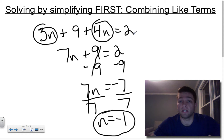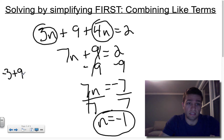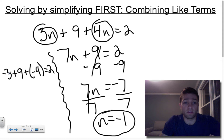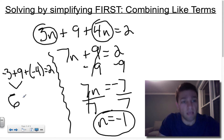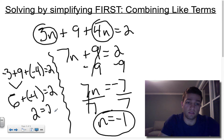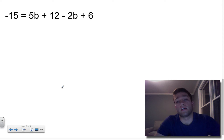The steps are: step 1, simplify by combining like terms; step 2, subtraction; step 3, divide using inverse operations. You can always check your work by plugging -1 back in: 3(-1) + 9 + 4(-1) = -3 + 9 + (-4) = 6 - 4 = 2. That checks out, so the equation is solved correctly.